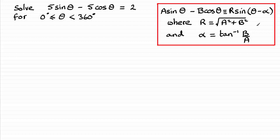It's a very quick, easy method once you get used to it. So what we've got here then is 5 sine theta minus 5 cosine theta. It's got this form here. If we were to write that in, you can see that it's identical in form to A sine theta minus B cosine theta, where A is 5 and B is 5.